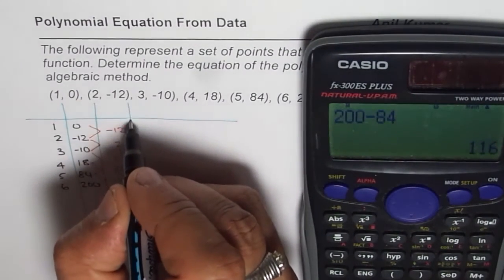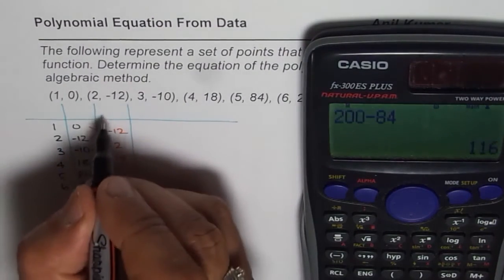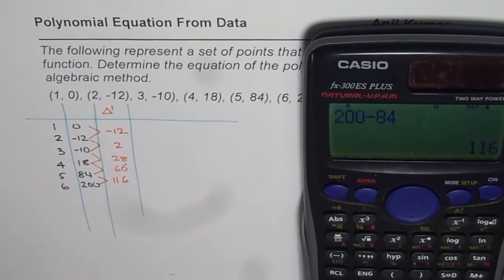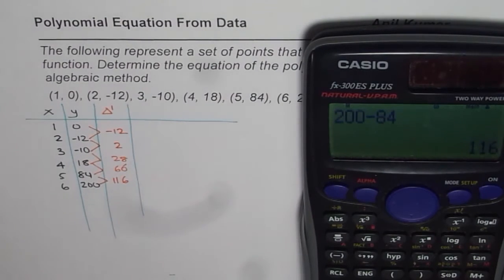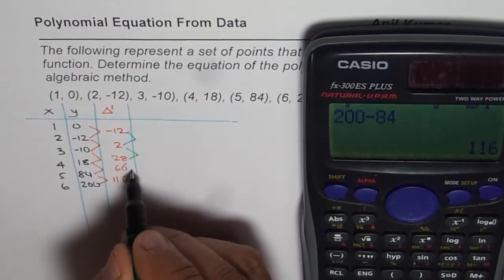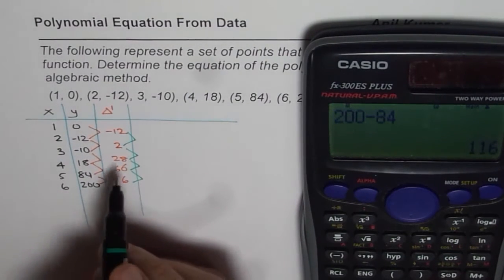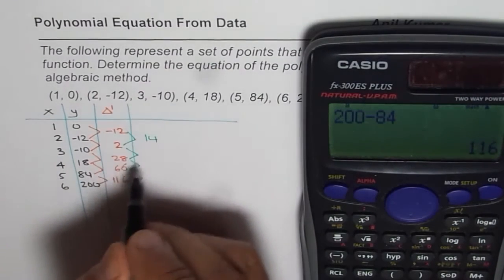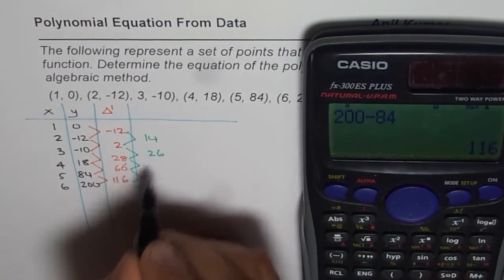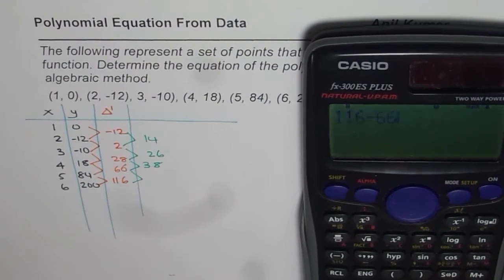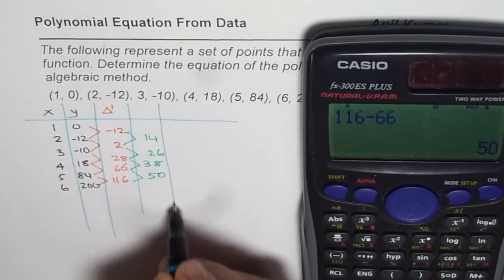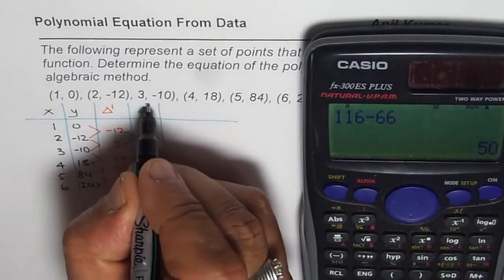The first difference is not constant, so the function is not linear. Let us find the second difference. 2 minus -12 is 14; 28 minus 2 is 26; 66 minus 28 is 38; 116 minus 66 is 50. The second difference is also not constant, so we'll go for the third difference.